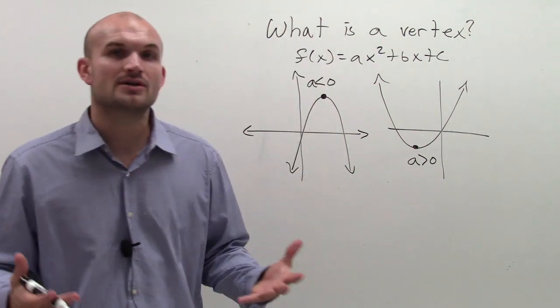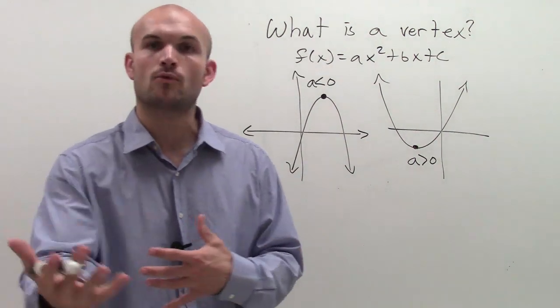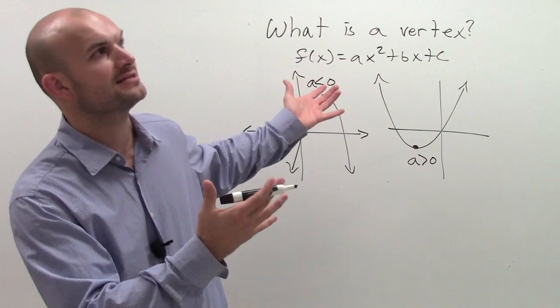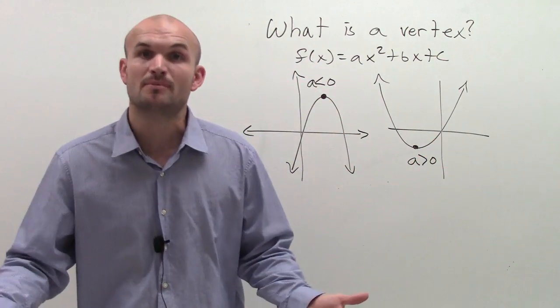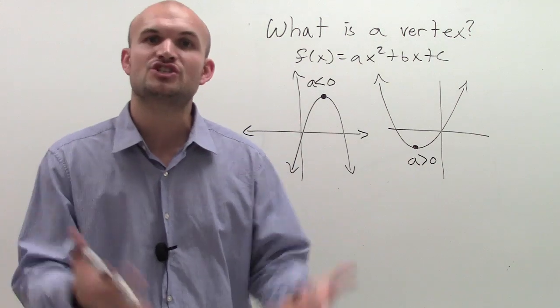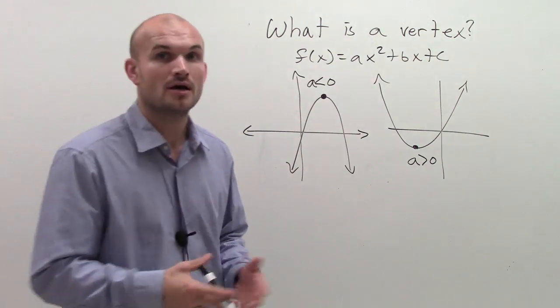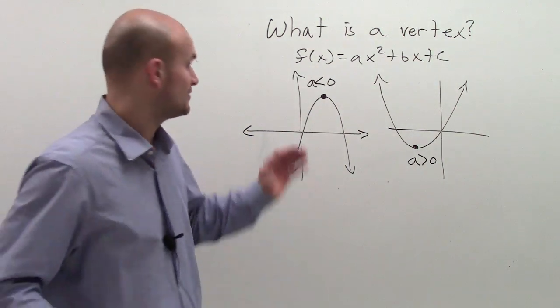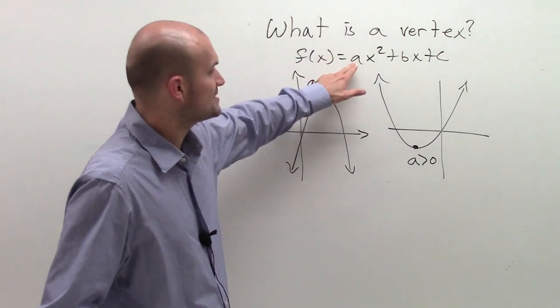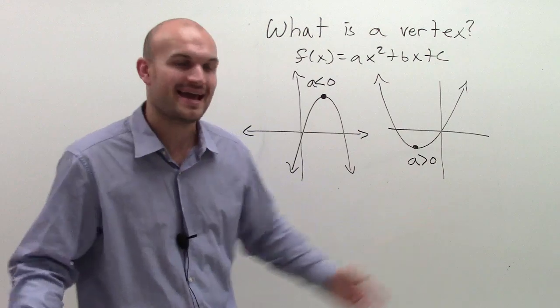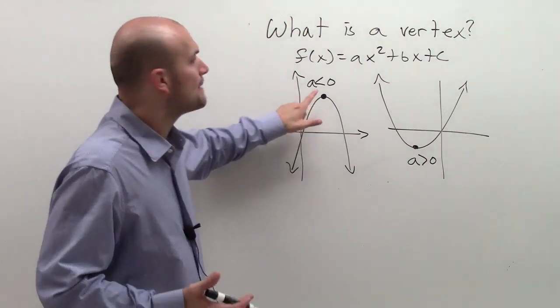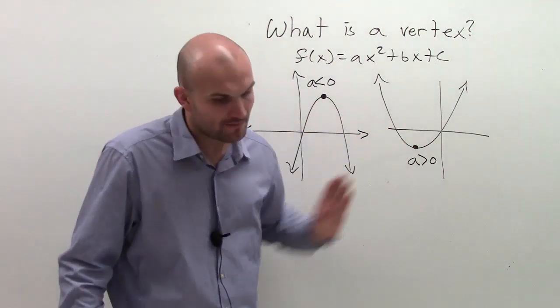All right. And it's really important for us to understand, because if we're given like a word problem, they're talking about what is the maximum, or what is the maximum amount, or what is the minimum amount. You need to understand what shape of graph are you going to be looking for, or what even type of function are you going to be looking for. Are you going to have a positive or a negative a? So it's important for you to understand that it's the maximum value or the minimum value.